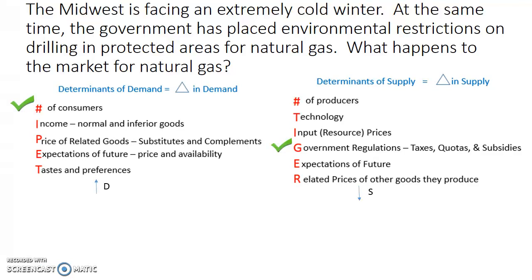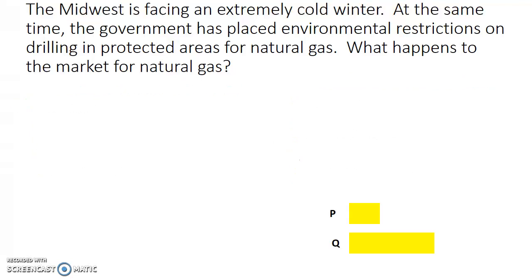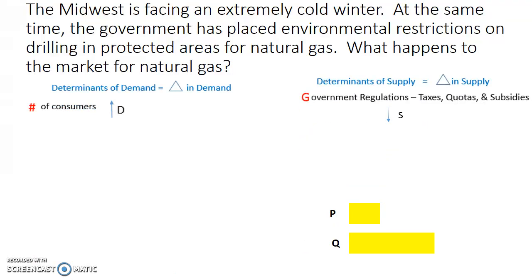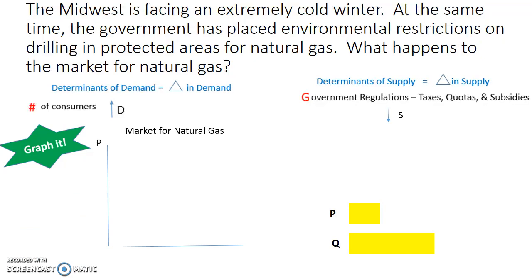Now that we've figured out the determinants, we need to figure out what is happening with price and quantity. We start with our graph for the natural gas market. As a reminder, we have an increase in demand and a decrease in supply. The graph has a title up top, with P and Q on the axes for price and quantity of natural gas. You have your downward sloping demand curve and your upward sloping supply curve, and their intersection gives you the equilibrium price and quantity.